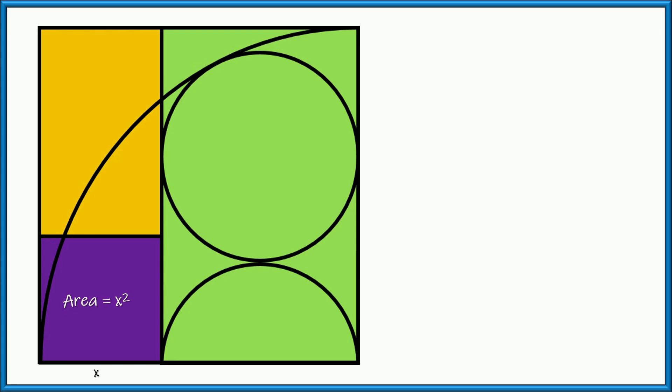So a square's area is the side length squared. So let's say the side length is x, so x squared. And the rectangle would be x times the other side, which we're going to call y. So xy. All right?